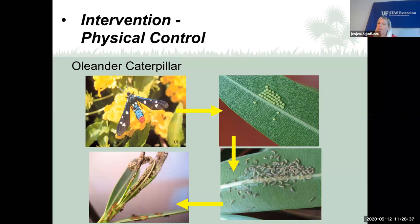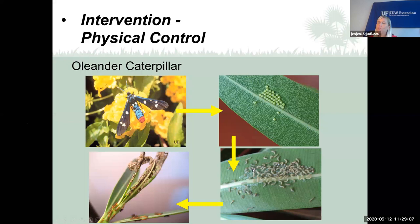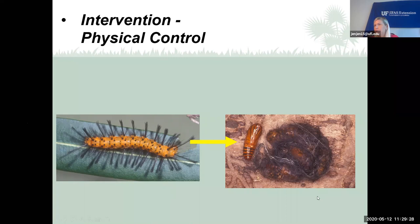Here's the oleander caterpillar — that orange caterpillar with black tufts of hair — and the beautiful moth it becomes. If you see this moth flying around your oleander, she's laying eggs. Part of physical control is picking off a leaf covered with eggs — there are at least 20 eggs you can eliminate at once. Or pick off a leaf with newly hatched caterpillars before they get bigger. When they're smaller, they're much easier to control than when they grow large and cover the entire plant.